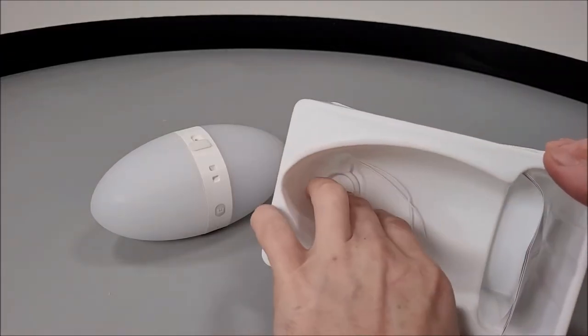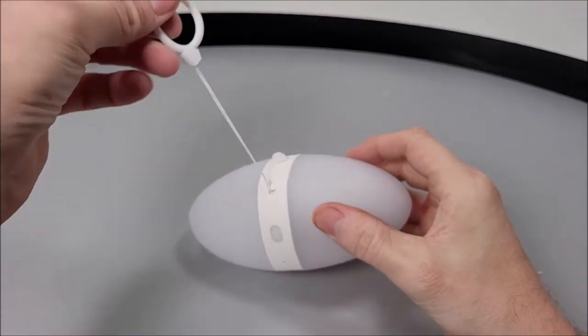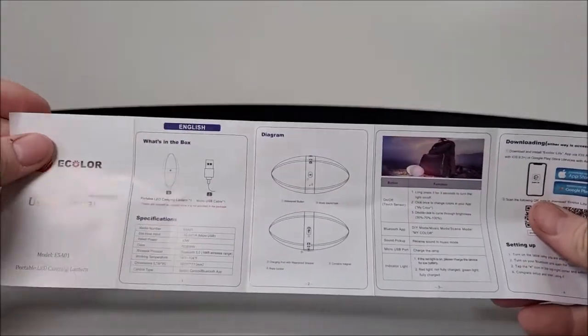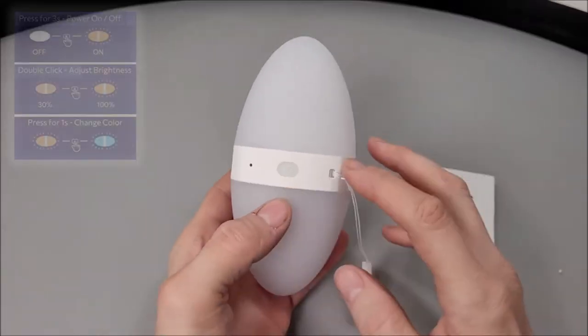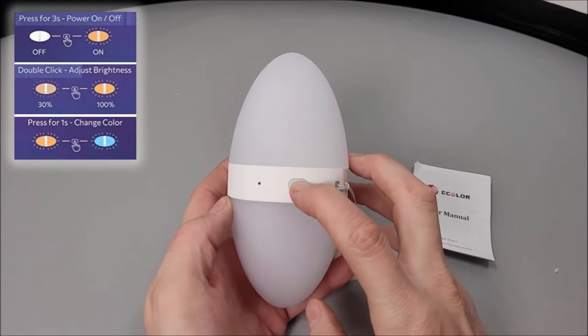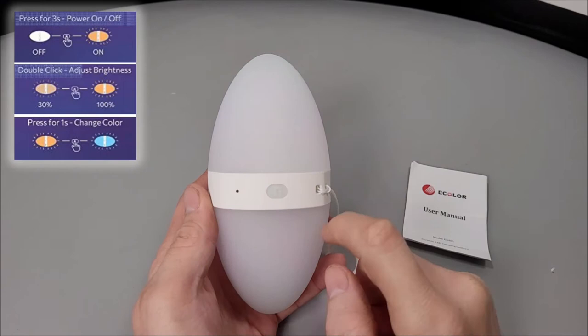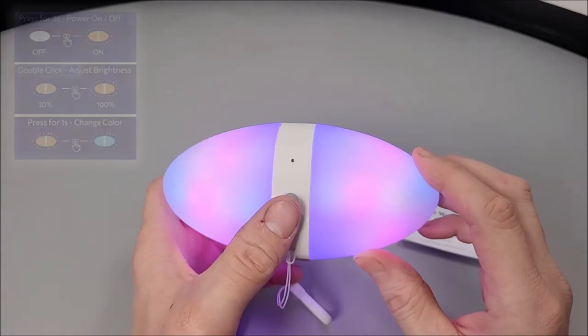We've got a lanyard accessory that is supplied and attaches with ease. There's also a central silicone power button. After a quick read of the simplified instruction manual, we found out that if you hold that button for three seconds it turns the light on and off. If you tap that same button twice it adjusts the brightness, and if you single tap it, it changes the color tone.